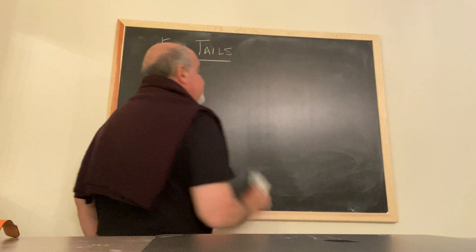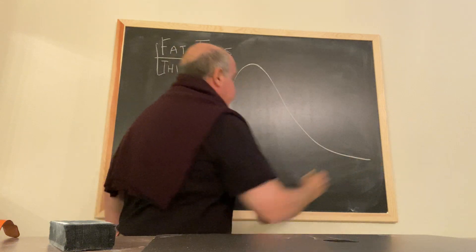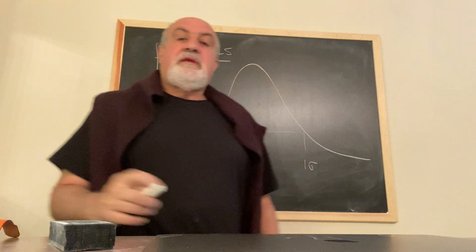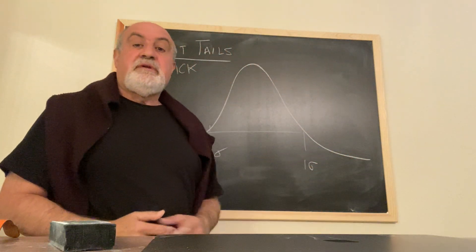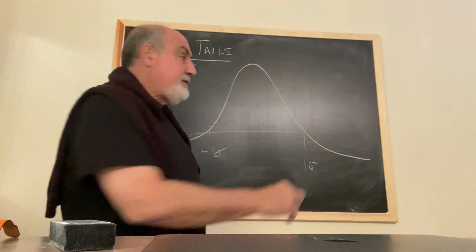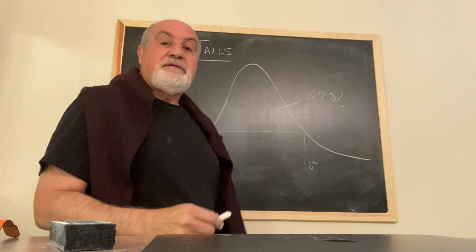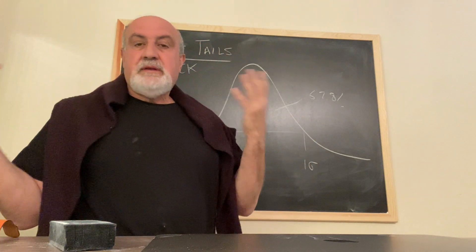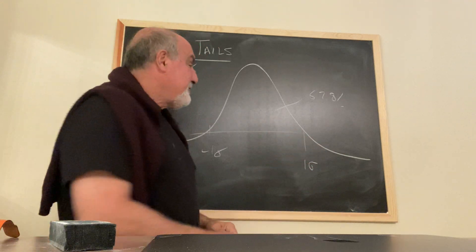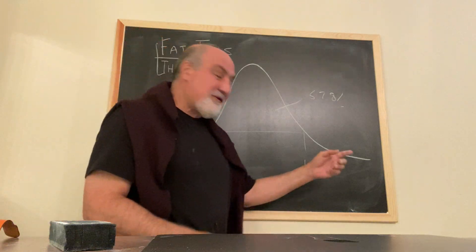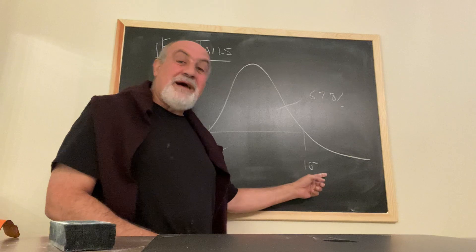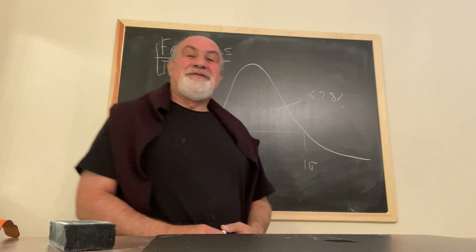Let's take a probability distribution — the Gaussian probability distribution. One sigma, minus one sigma. We know that about 15.6 percent of observations happen beyond one sigma. I quiz people: what happens when you fatten the tails of the Gaussian? 67.2 percent of observations are supposed to take place in that central corridor — what happens? You actually get more observations in the center and fewer observations in the tail beyond one sigma, because the deviations that do occur there will be fewer, but when they happen, they're going to be very important. That's the definition of fat tails.